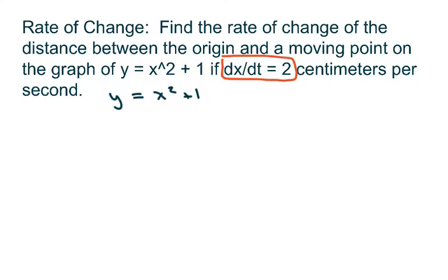Hi everyone, we're going to find the rate of change of the distance between the origin and a moving point on the graph of y equals x squared plus 1 if the derivative of x with respect to t is 2 centimeters per second.